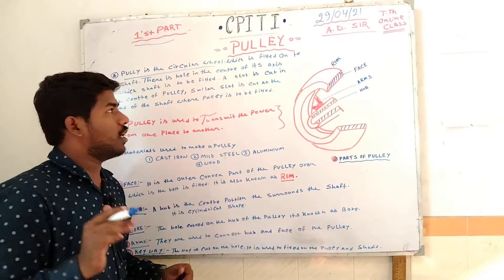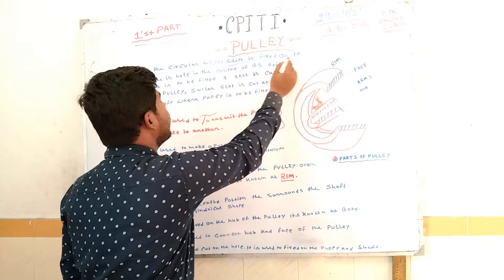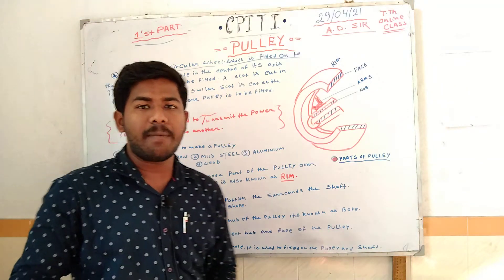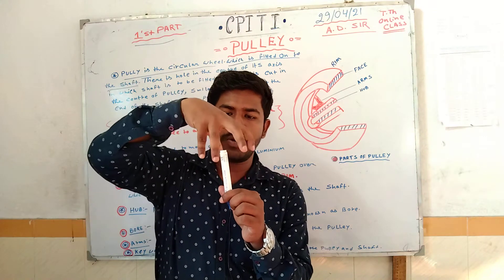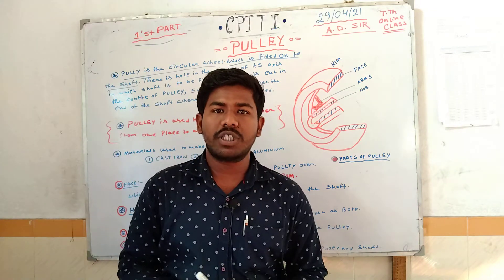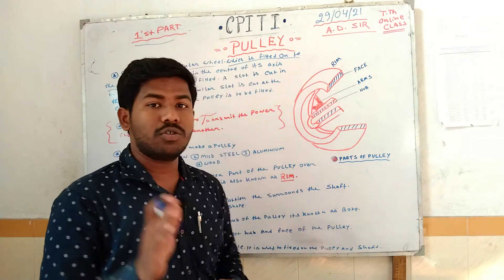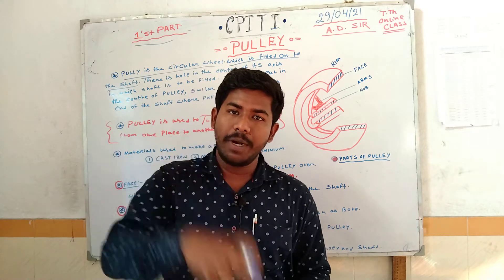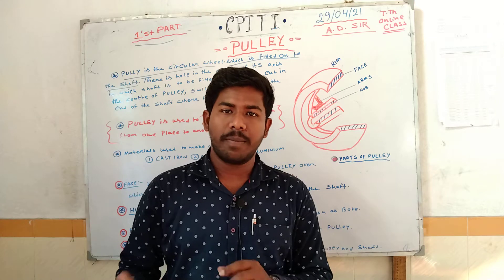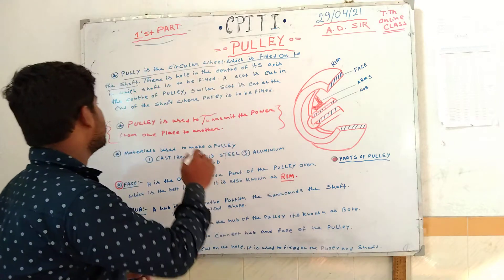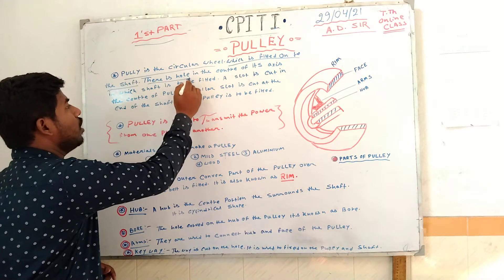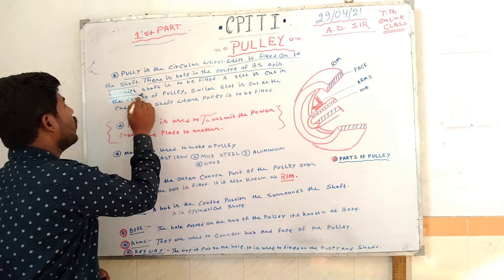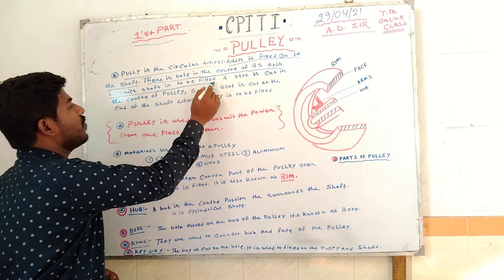The wheel is fitted onto the shafts. The shaft can fit in the middle of the axis. In this case, the shaft can fit in the middle of the axis. There is a hole in the center of the axis in which the shaft is to be fitted.